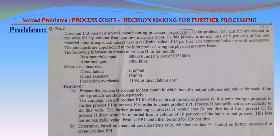In Process G, joint products P1 and P2 are created in the ratio of 5 to 3 by volume from the raw materials input. In this process, a normal loss of 5% of the raw material input is expected. Losses have a realizable value of £5 per liter. The company holds no work in progress. The joint costs are apportioned to the joint products using the physical measure basis.